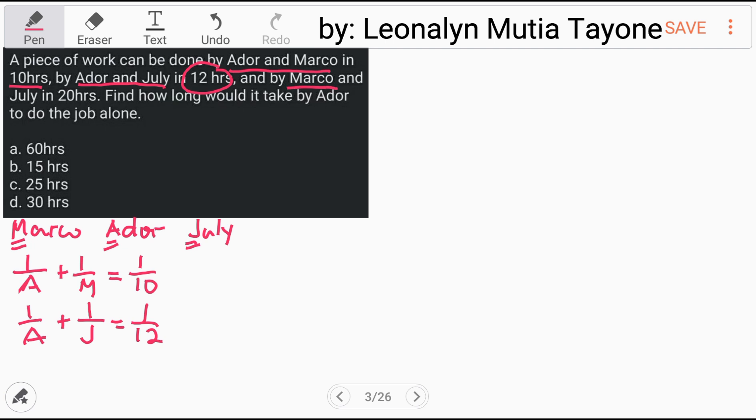Next, by Marco and Julai. So that will be one job—let M be the number of hours for Marco to finish alone, plus Julai, 1 over J. Together, one job will be completed in 20 hours. So, these are our equations. This is equation 1, equation 2, equation 3.